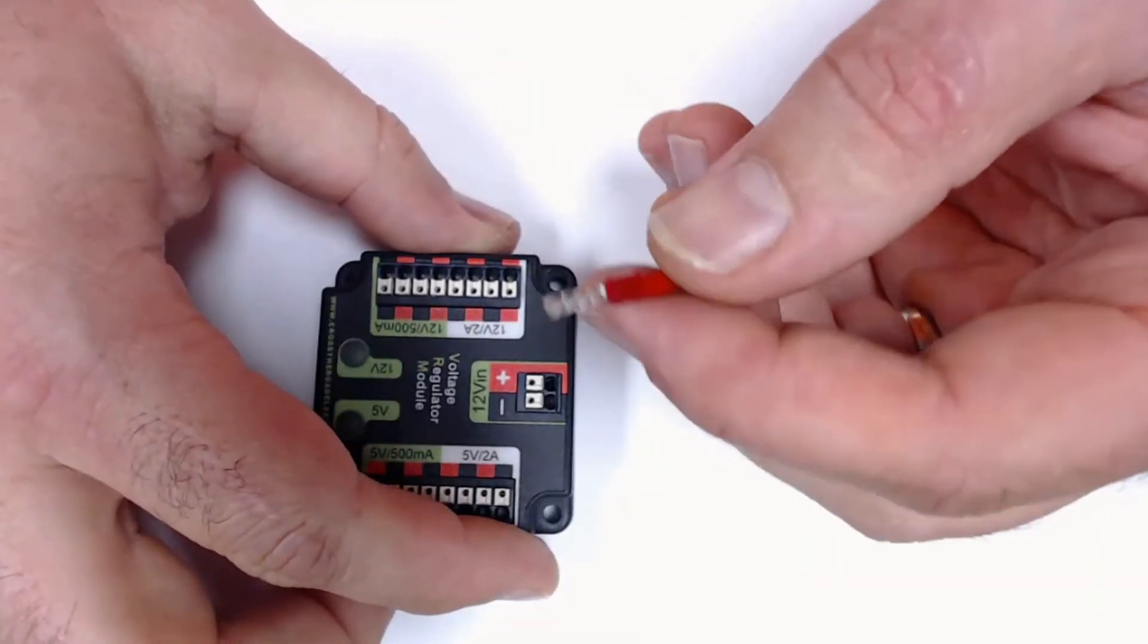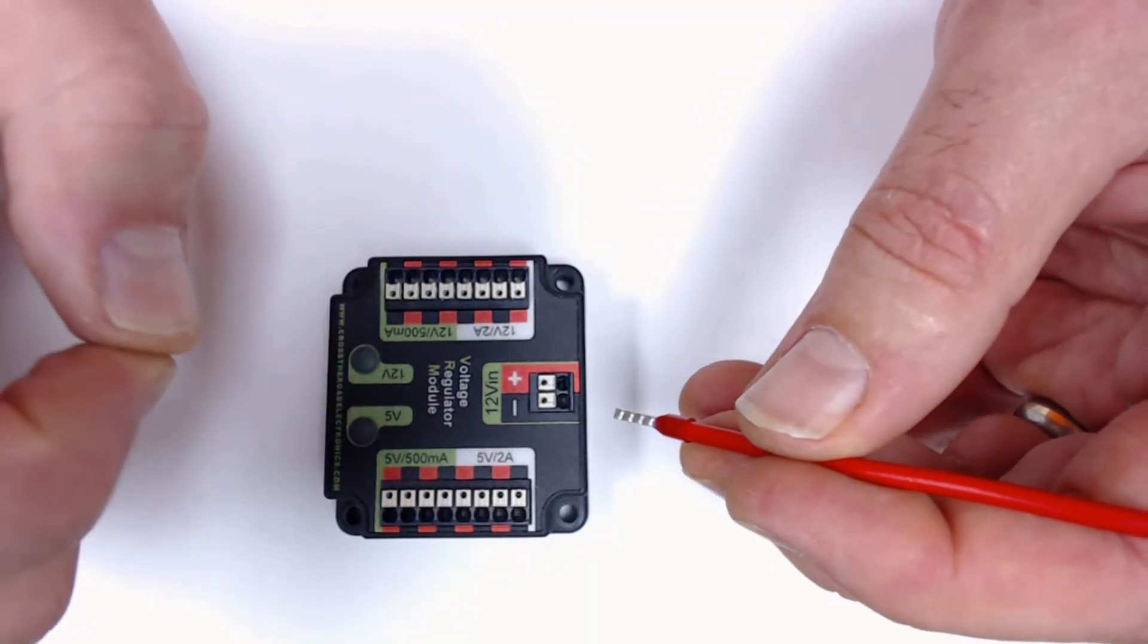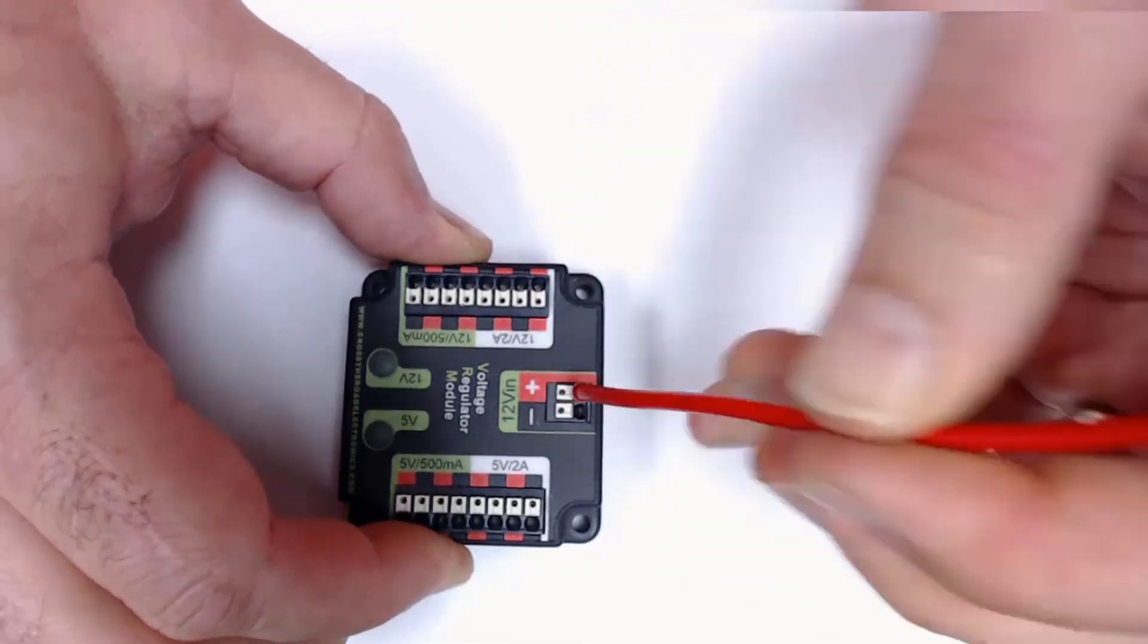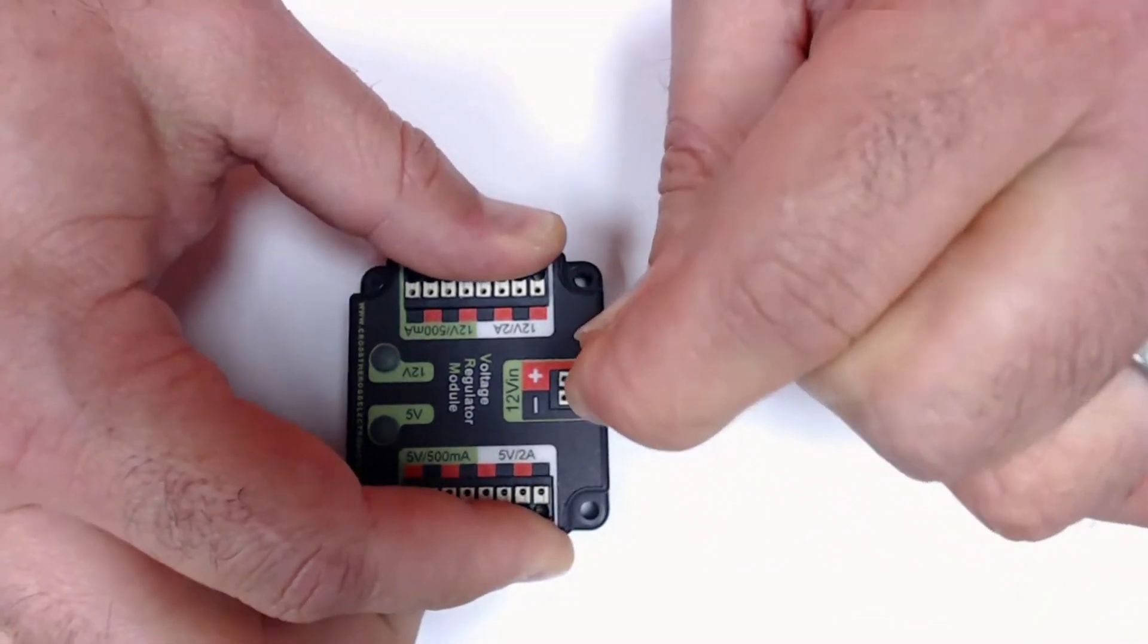What that does is it shrinks the connector just a little bit, gives it a little extra crimp, a little extra compression so that it fits into this connector much easier. You give it a little bit of extra force, you've got to kind of wiggle it in, but once it's in, it's in.